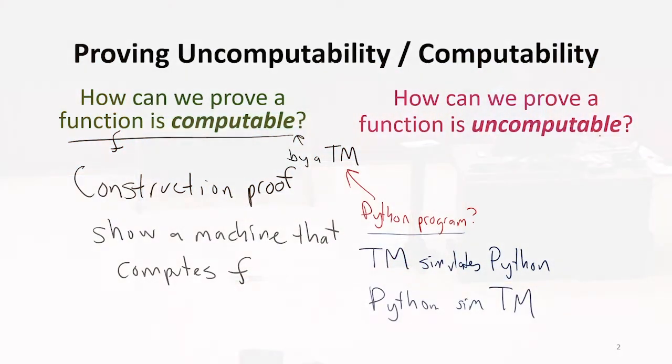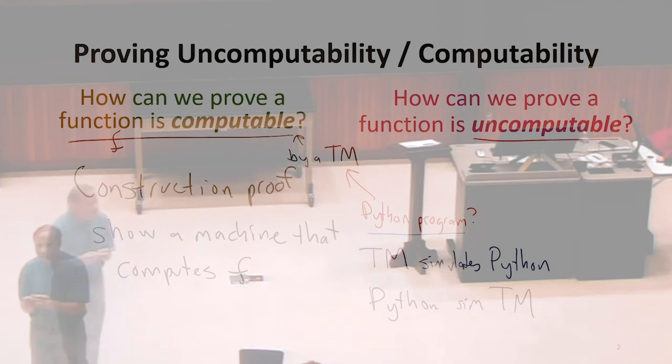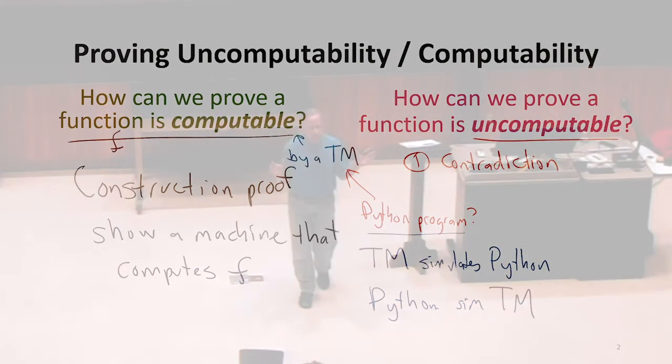So what about proving something is uncomputable? If we're going to prove uncomputability, what do we have to do? So we have two main strategies. One is contradiction. We're showing that if we could compute this, something impossible would result.